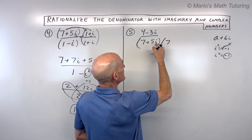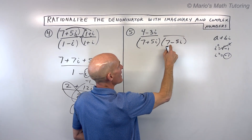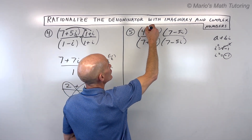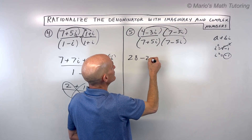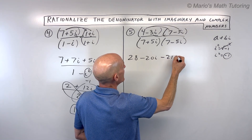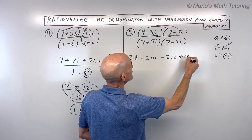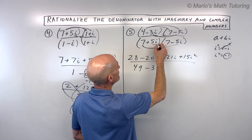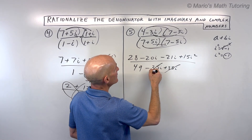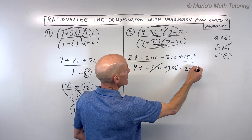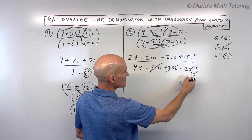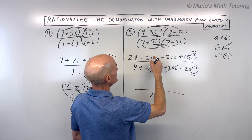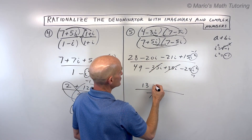So seven plus five i — we don't want that i in the denominator, so we multiply by the complex conjugate, changing the plus to a minus. Whatever we do to the denominator, we do to the numerator. FOILing: four times seven is 28, four times negative five i is negative 20i, negative three i times seven is negative 21i, and negative three i times negative five i is positive 15i squared. In the denominator: seven times seven is 49, seven times negative five i is negative 35i, five i times seven is positive 35i — those cancel — and five i times negative five i is negative 25i squared. i squared is negative one, so negative 25 times negative one is positive 25, plus 49 gives 74. In the numerator: 15i squared is negative 15, plus 28 is 13; negative 20i minus 21i is negative 41i.